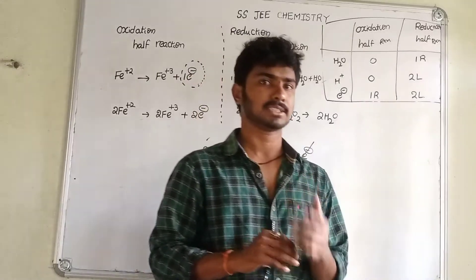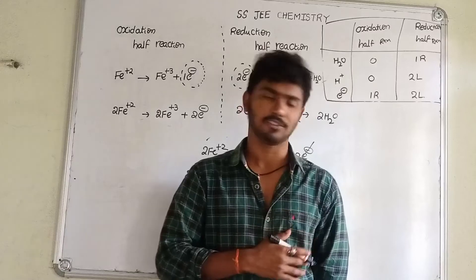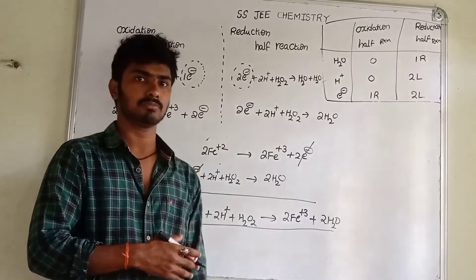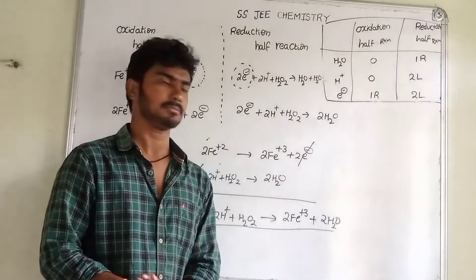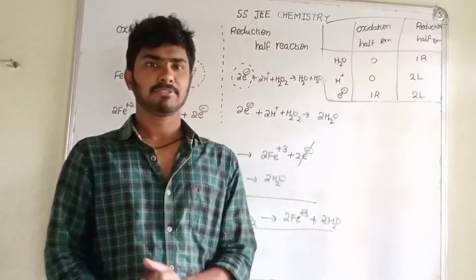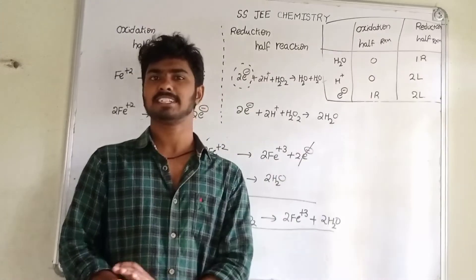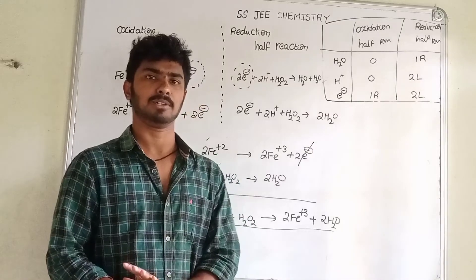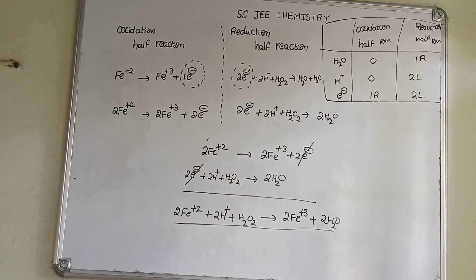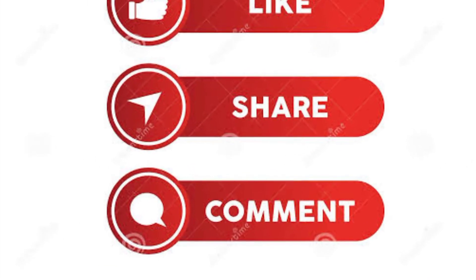And Mn²⁺ plus MnO₄⁻ — this equation is in the previous video. So follow the two equations. You can see the equations in the next one. This is the third question. Please share this video. Thank you.